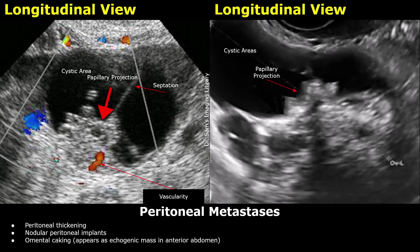Peritoneal metastases can occur due to transcoelomic spread of tumor cells. Ultrasound may show peritoneal thickening, which appears as an irregular, echogenic lining of the peritoneal surfaces. There may also be nodular peritoneal implants, seen as small hypoechoic or echogenic nodules along the peritoneum. A classic advanced finding is omental caking, which appears as a solid, echogenic mass in the anterior abdomen, replacing the normal omental fat.